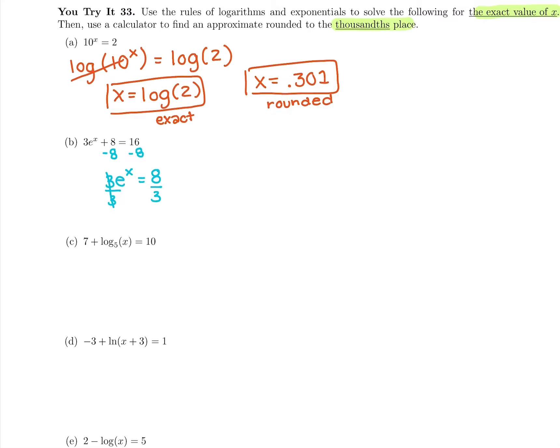Which is going to give me e^x equals 8 thirds. So I need to take the ln of both sides now. To get rid of that e base, we take ln of both sides. That way these cancel. Here's my exact answer: ln of 8 thirds.